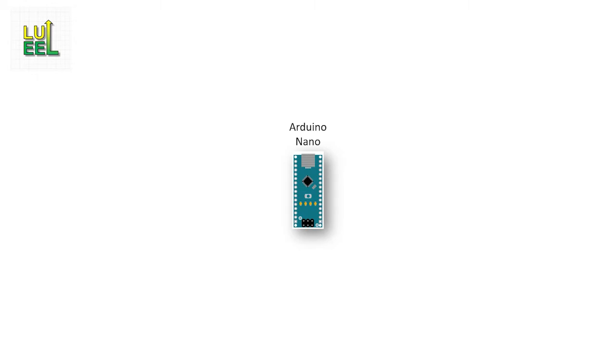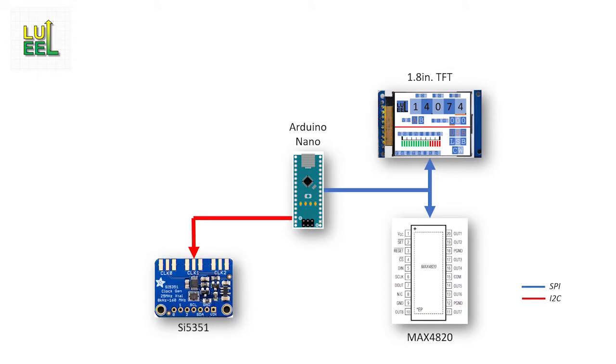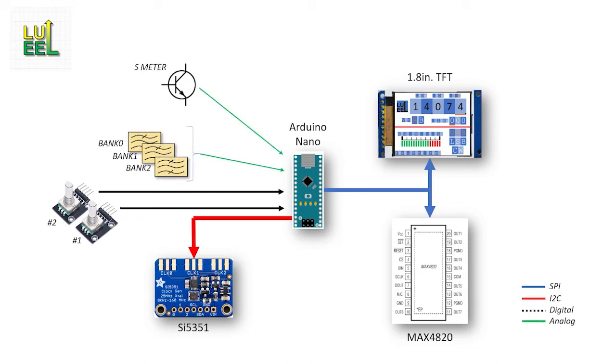Let's begin with the hardware the Arduino will control. There's the 1.8-inch display in the MAX4820, both of which will be using the SPI interface. It will also control the SI5351 clock generator via the I2C interface. Next up are the inputs to the Arduino, both from the hardware and user controls.